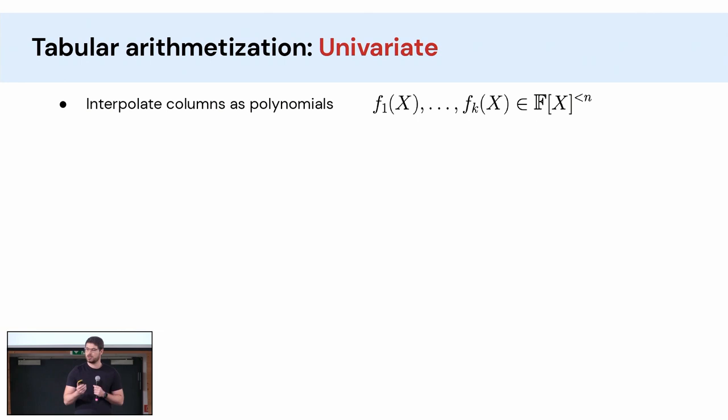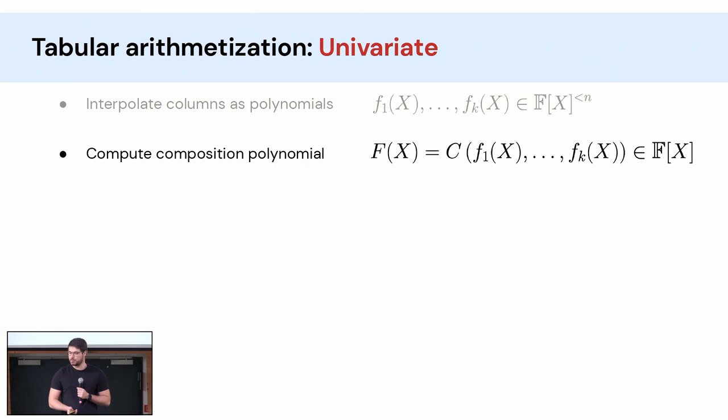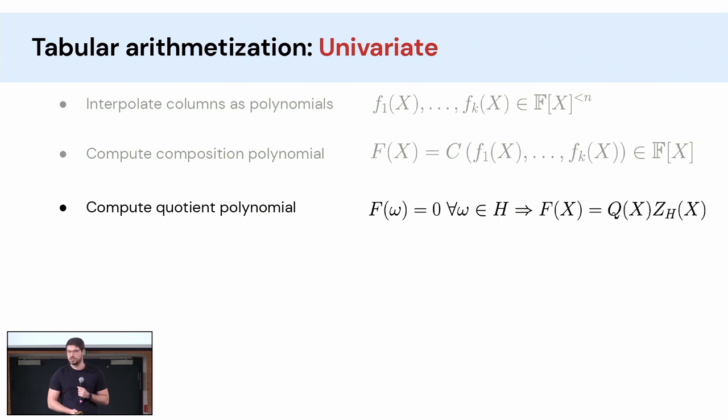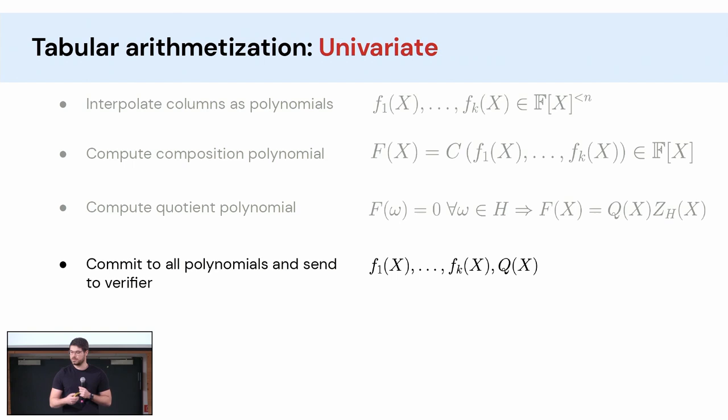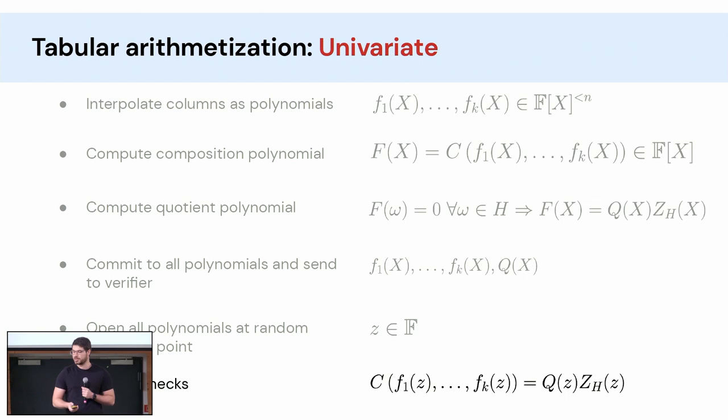So if you choose to use univariate polynomials you interpolate the columns as polynomials of degree less than n. You compute this composition polynomial F which is just the constraints evaluated at all the column polynomials. Then you can prove that this polynomial vanishes on the subgroup H. This implies that Z_H divides F and we call q the quotient. Then you commit to all the polynomials, send them to the verifier. Verifier sends you back a challenge z, and then the verifier checks this identity.